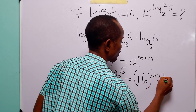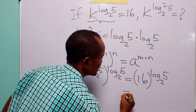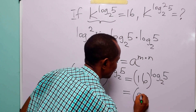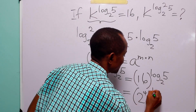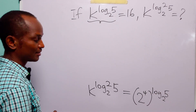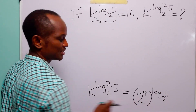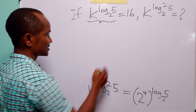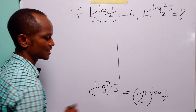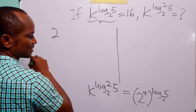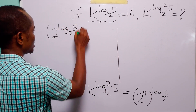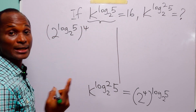Now there are two ways to simplify the right-hand side. In the first method, we note that 16 equals 2 to the power 4, so we have 2⁴ raised to the power log₂(5). When we have two powers like this, we can switch their places, giving us 2 to the power log₂(5), all raised to the power 4.